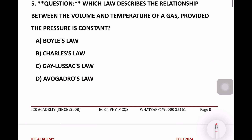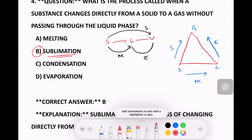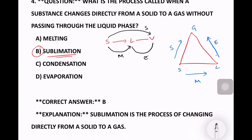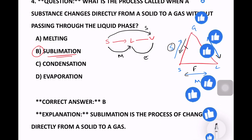Let's try to understand this in a triangle form: solid, liquid, and gas. Solid to liquid is melting. Liquid to gas is evaporation or vaporization. Gas to solid through the middle is sublimation. Liquid to solid is freezing. We will cover the remaining in a new video.